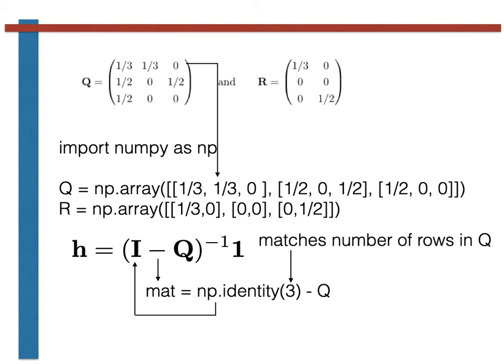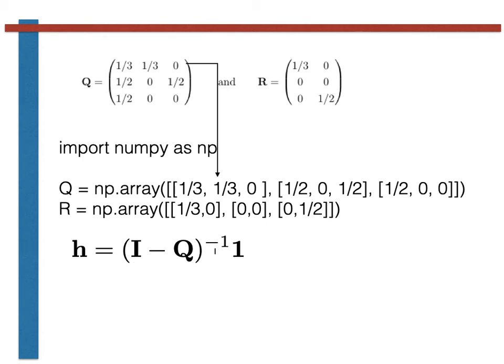We now need to invert this output matrix, mat. We can do this in Python by using the np.linalg.inv command that Python provides us, as shown here.